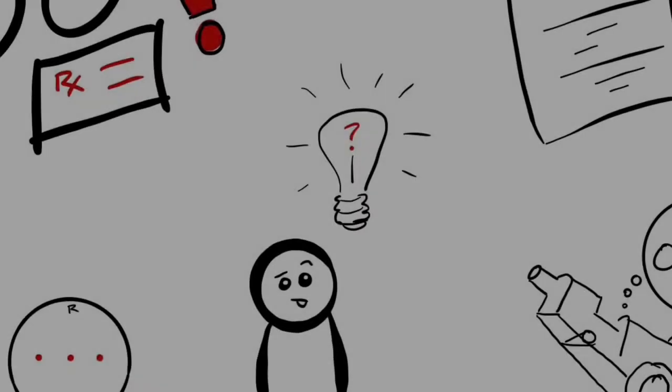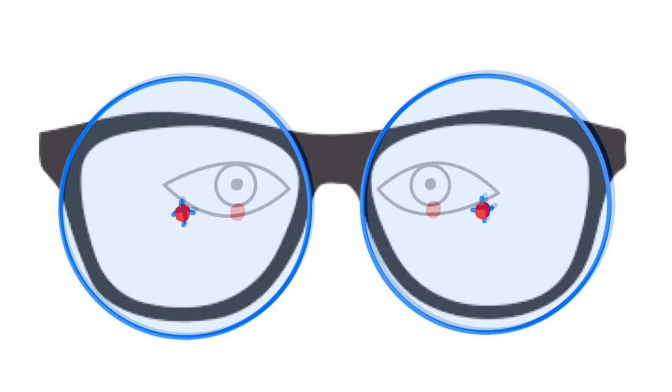Hello, in this video I'm going to show you how to calculate prism for decentration in the horizontal meridian. This surfacing technique can be used to position the optical center at the desired point on the lens blank.